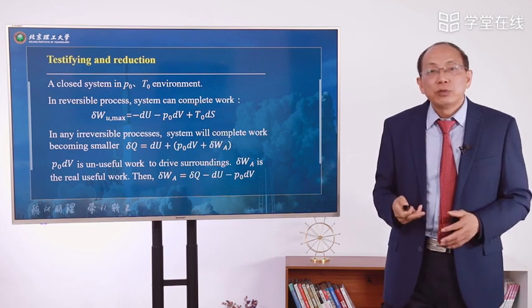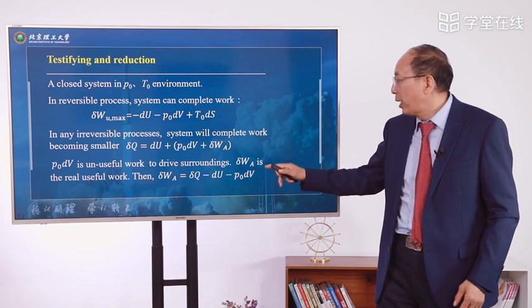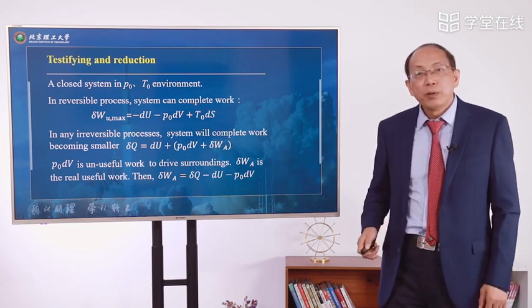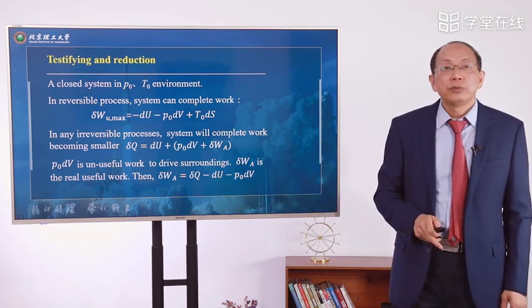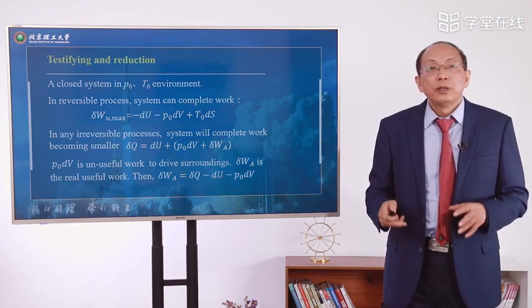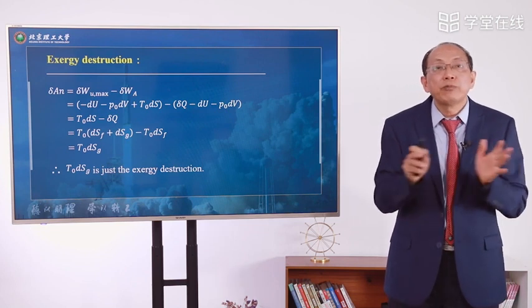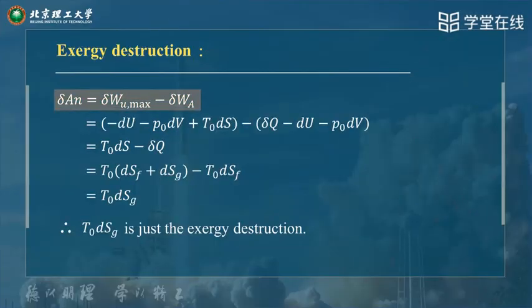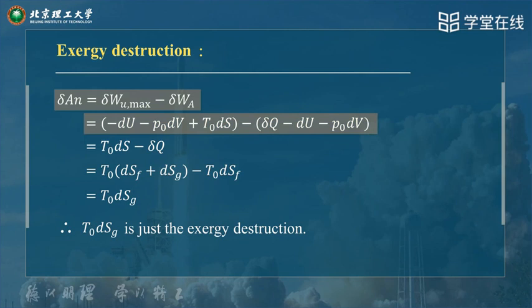From the energy balance, we obtain delta WA equals delta Q minus DU minus P0·DV. The work destruction delta AN equals delta W maximum minus delta WA. Substituting the equations, we get minus DU minus P0·DV plus T0·DS for the maximum, minus (delta Q minus DU minus P0·DV) for the actual. This simplifies to T0·DS minus delta Q.